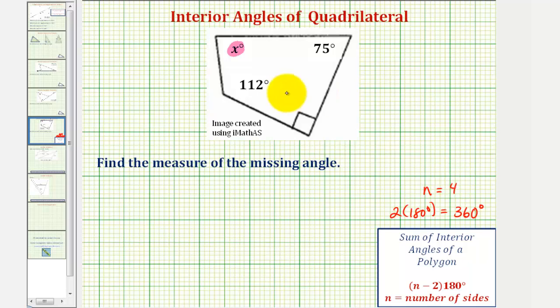So the sum of the interior angles is equal to 360 degrees for any quadrilateral. But even if we forget this, we should be able to figure this out on our own, as long as we can remember that the sum of the interior angles of a triangle is equal to 180 degrees.